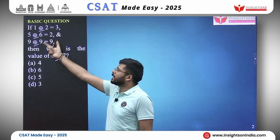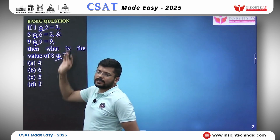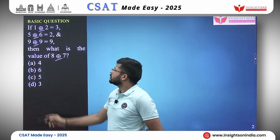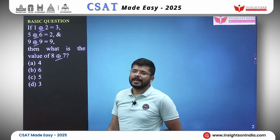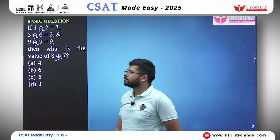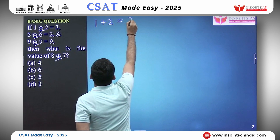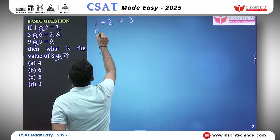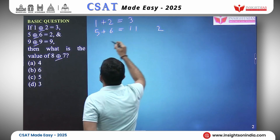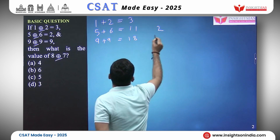Let's try simple addition: 1 plus 2 is 3 — that checks out. But 5 plus 6 would be 11 and they have 2; 9 plus 9 would be 18 but they have 9. Notice all results happen to be single-digit numbers.